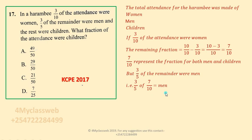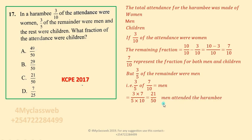Therefore, three fifths of 7 out of 10 gives us the fraction for men. We represent 'of' with multiplication and multiply straight away: numerators 3 multiplied by 7 gives 21, and denominators 5 multiplied by 10 gives 50. Therefore the fraction for men was 21 out of 50.